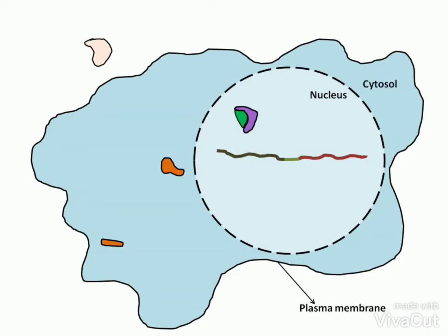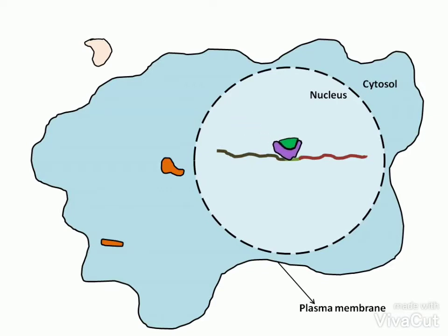The hormone binding changes the conformation of the REC. REC forms homodimers or heterodimers with other hormone receptor complexes and binds to specific regulatory regions or promoters called hormone response elements, or HRE, in the DNA adjacent to specific genes.